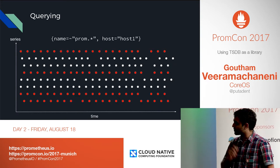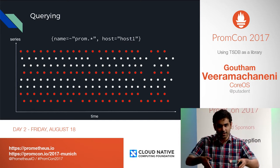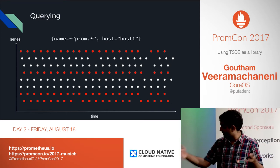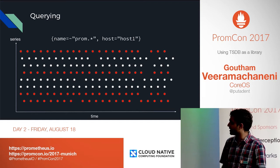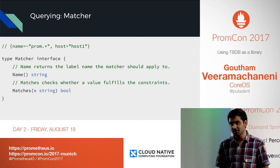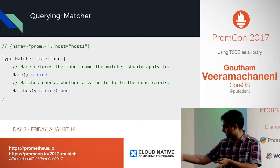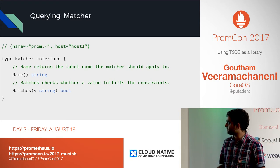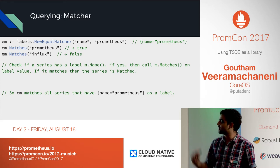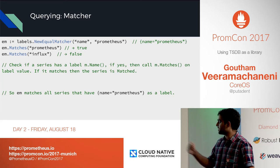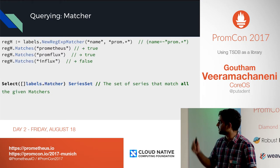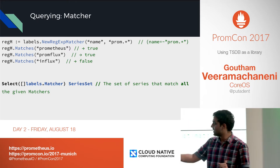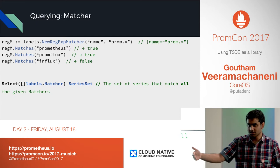We have a bunch of series and a PromQL expression. A PromQL expression is a label name and a constraint on the label value. We have an equal matcher, a regular expression matcher, a prefix matcher. We use Golang interfaces — we have a matcher interface that returns the label name and whether the label value matches a constraint. If you give this to the database, it's the database's job to give you all the series that satisfy the matcher. For example, an equal matcher with name equal to 'prometheus' gives all series with that name. The regular expression matcher accepts patterns like 'prom.*'. You pass all matchers to the database in this format and get a series set.